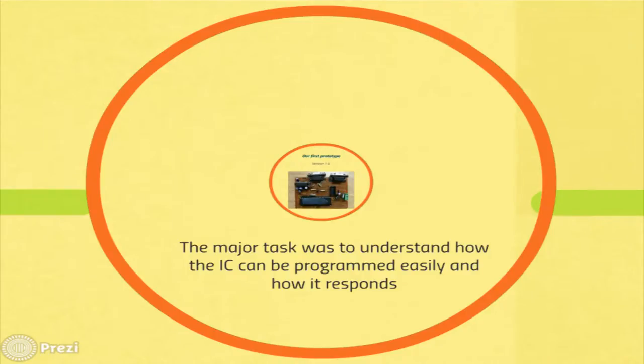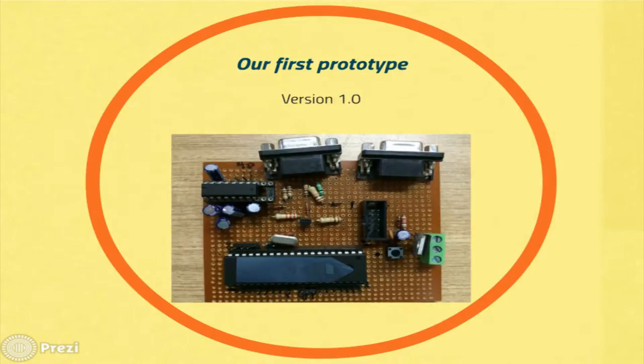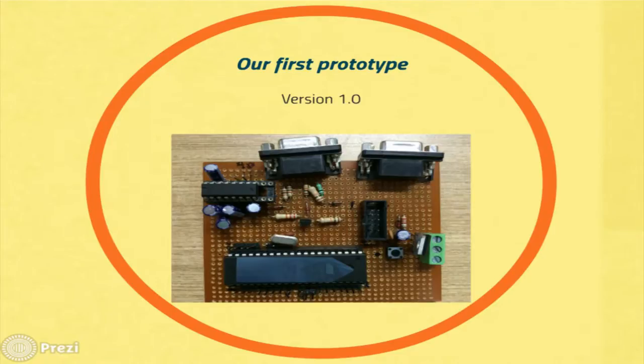The major task was to understand the IC and how we would be programming it. You guys are well versed with the terminals you use on Linux. We use the same terminal and there's this thing called AVRDUDE — don't laugh at the name — but this is the tool used to flash your AVR or PIC controllers. This is our first prototype that we built. We would proudly call it version 1.0. You can see those two DB9 connectors — one is for UART and the other is for programming. There's also the ATMEGA 16A IC, MAX232 for UART, and the power supply.